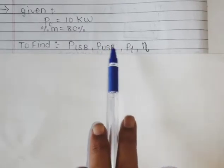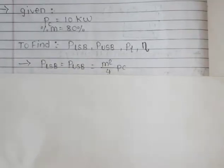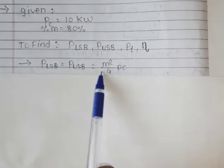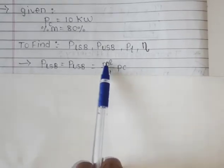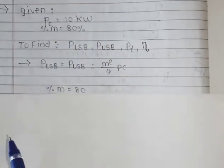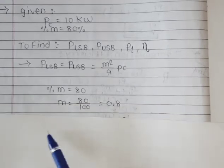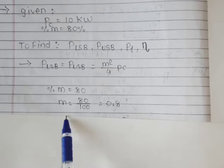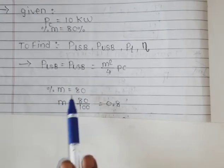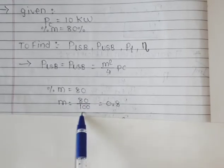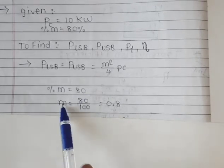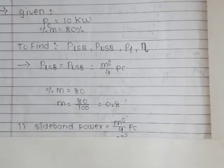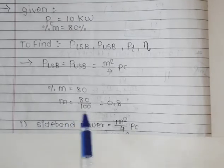Firstly, the formula for PLSB and PUSB is m²/4 × Pc (carrier power). Carrier power Pc is already known to be 10 kilowatt. We need to first convert the percent of modulation to modulation index. If percent of modulation is 80%, then modulation index m = 80/100 = 0.8.